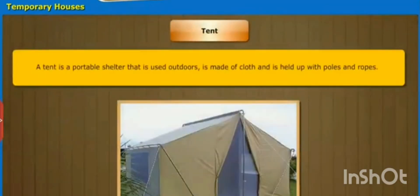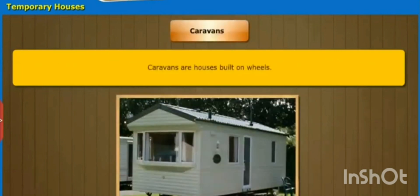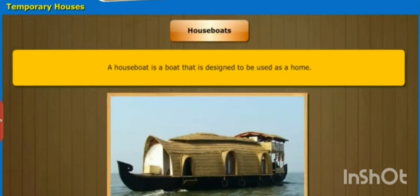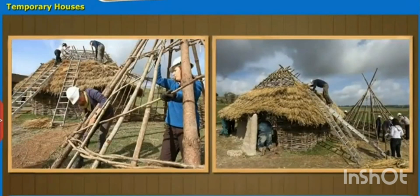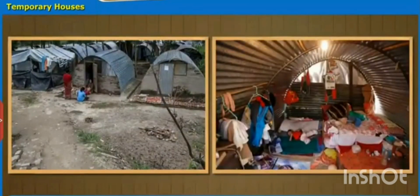Temporary houses are made up of materials like clay, mud, and straw, and they are movable houses. These are called temporary houses. For example, huts are made up of clay, straw, etc.